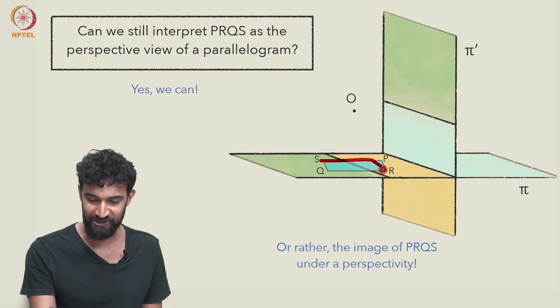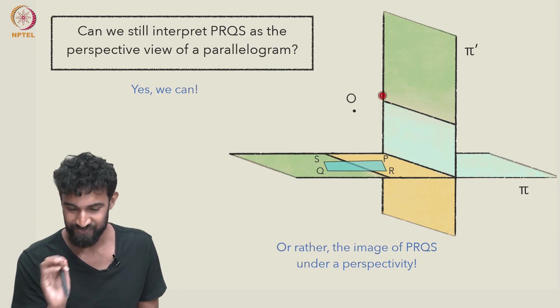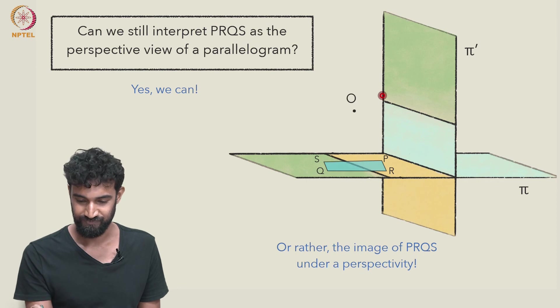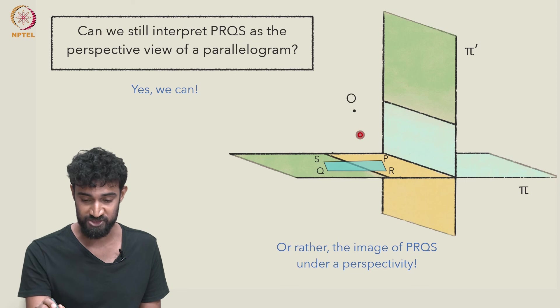You can also think of this parallelogram as kind of intersecting the picture plane. What I meant to say is that if this is the center of perspectivity, the parallelogram actually lies under you. If you're viewing it from here, it's under you.